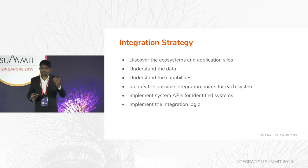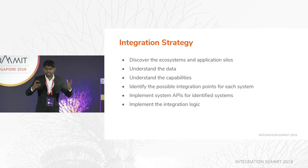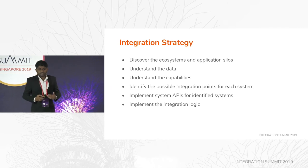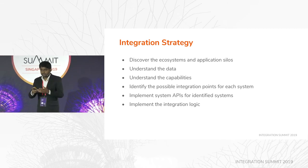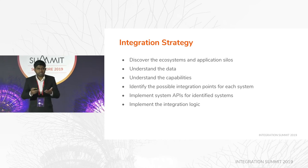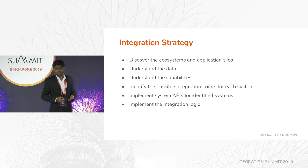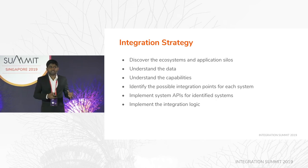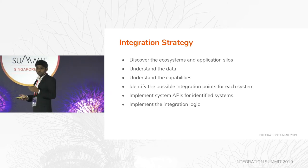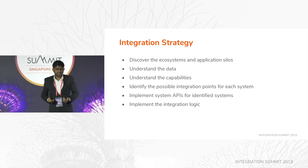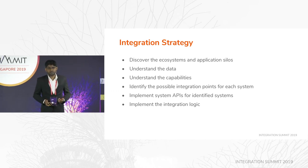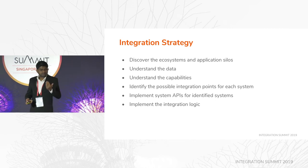Once you understand your backend systems, data types, and those things, you have to formulate your integration strategy: discover the ecosystem and application silos, understand the data types, understand the capabilities you need, and understand the possible integration points. That's very important because you might have many backend systems, but that doesn't mean you need to expose everything. In our Super City example, for an online platform, do they need to expose the HR system? No. So think about those things, then implement system APIs for identified systems and implement the integration logic — the orchestration layer.